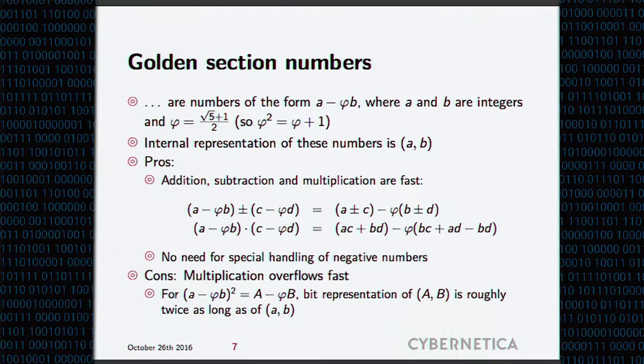First, to introduce the golden section numbers, they are represented in form A minus Phi B, where Phi is the golden section constant, which means that Phi squared is equal to Phi plus one, which is important when we start to simplify products. Internal representation of these numbers is just two integers.